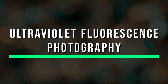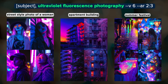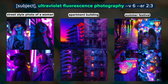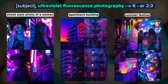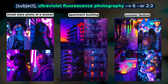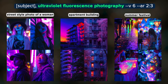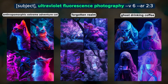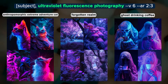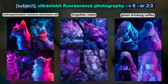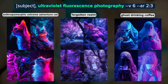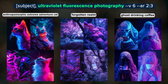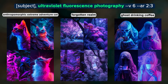Ultraviolet fluorescence photography uses UV light to capture images, which can reveal details not visible to the human eye, such as markings on plants that attract insects. By including 'ultraviolet fluorescence photo' in your prompt, you'll get images with a heavy violet hue and bright fluorescent colors that make it look like the images were taken under a blacklight. Similar to the photogram style, our adventure cat is not anthropomorphic, so that might take more work. The forgotten realm images have a nice infrared quality, and the ghosts look purple and spooky with their coffee. For a more subtle but still purple effect, remove the word 'fluorescence' and just use 'ultraviolet photo.'